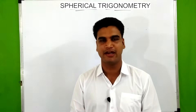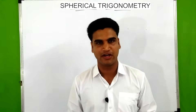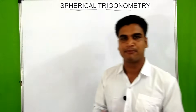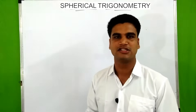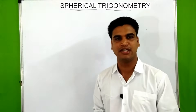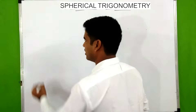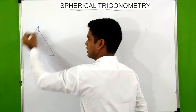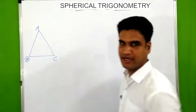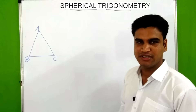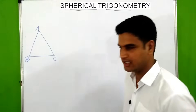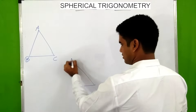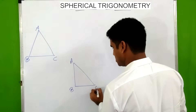Plane trigonometry is actually applied for plane right angle triangles. Plane triangles means triangles having sides made up of three straight lines. These are known as plane triangles. A right angle triangle means a triangle having one angle of 90 degrees, so this is a plane right angle triangle.